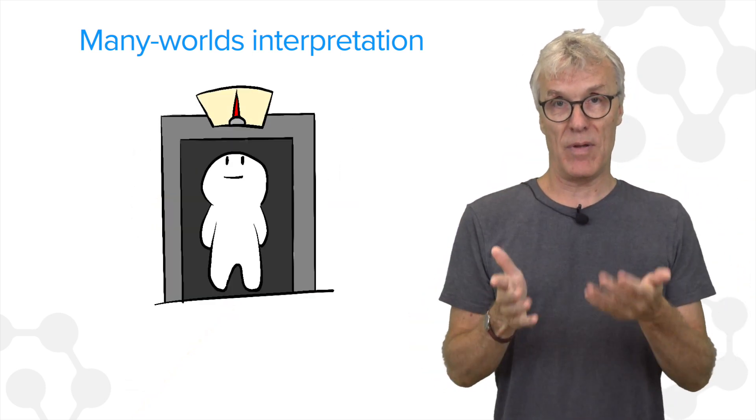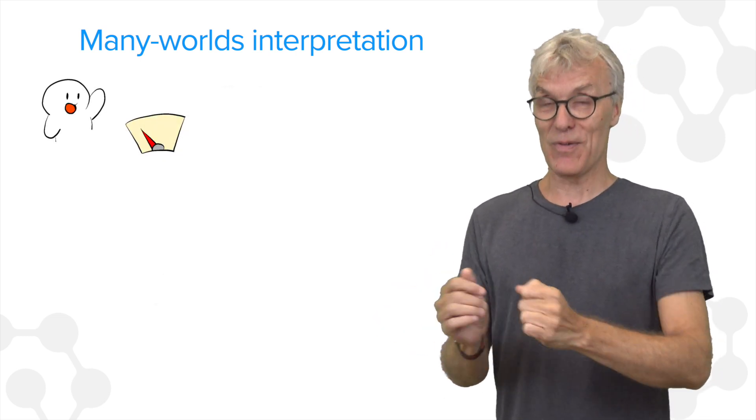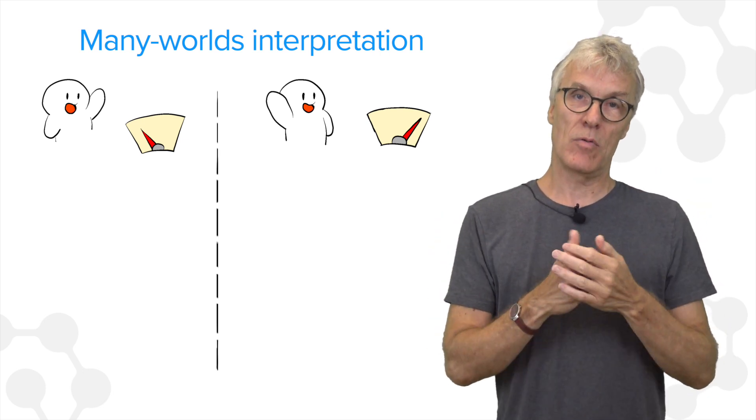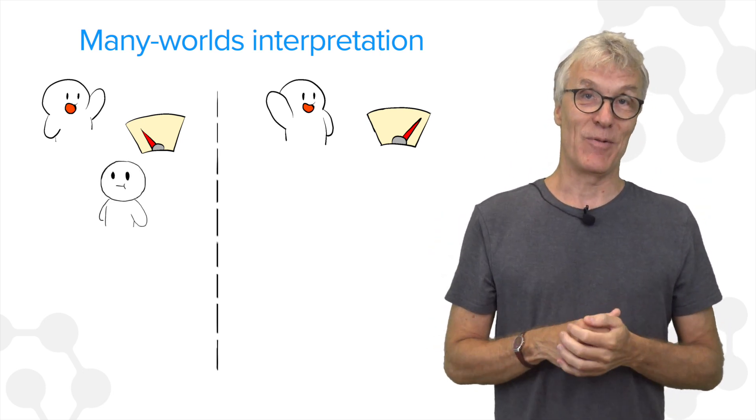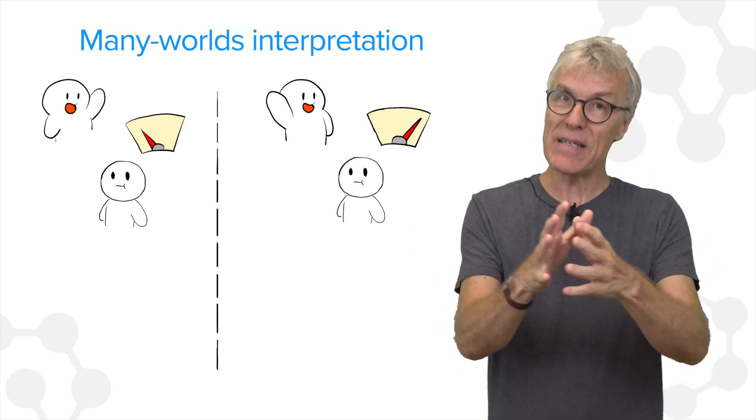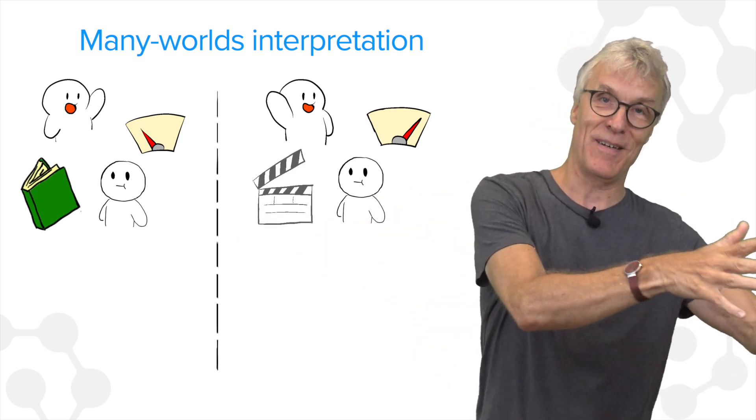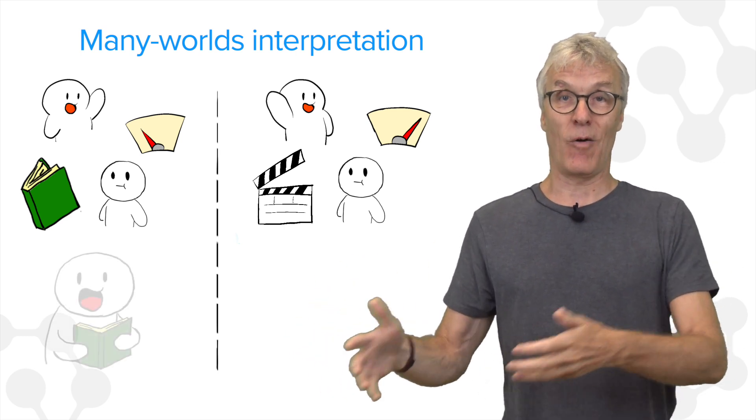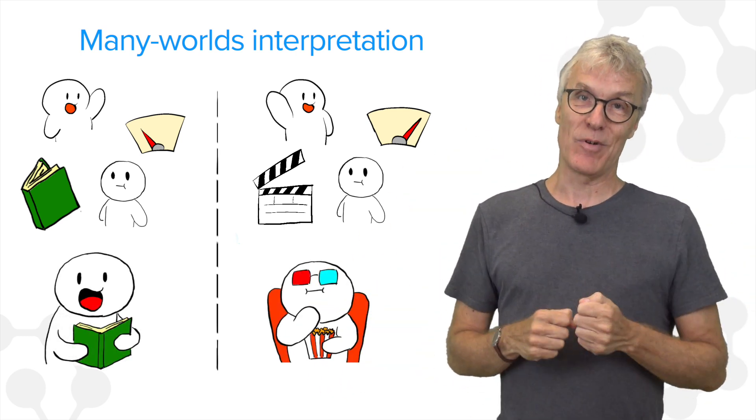And now, we come to me, because I'm the experimentalist in the lab, I look at the measurement apparatus, and I see it point to the left, and I also see it point to the right. And because I'm also quantum, I'm also registering both left and right. And I talk to you, and I tell you it was on the left, and at the same time, I'm also telling you it's on the right. So this is quite dramatic. We might write a book about it if it's on the left, and we might shoot a movie if it's on the right. So in fact, we both write the book and shoot the movie.